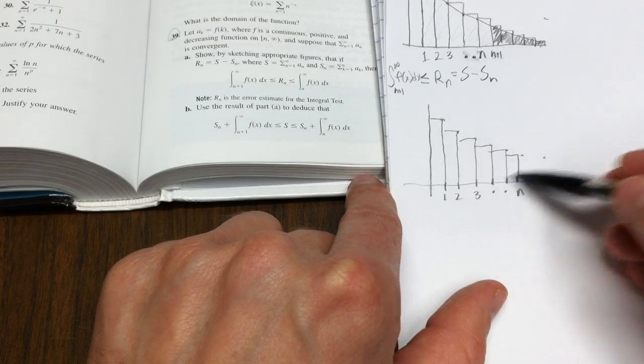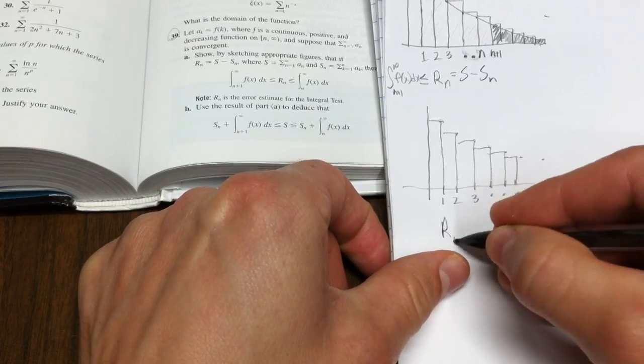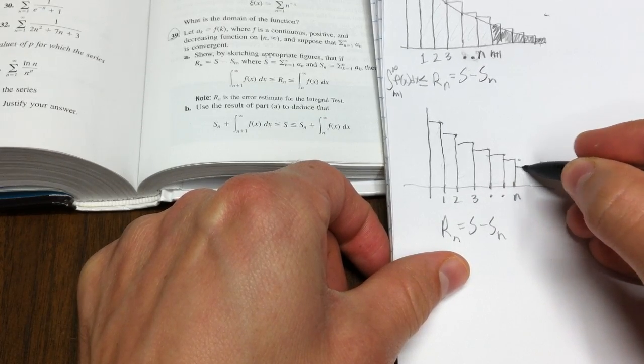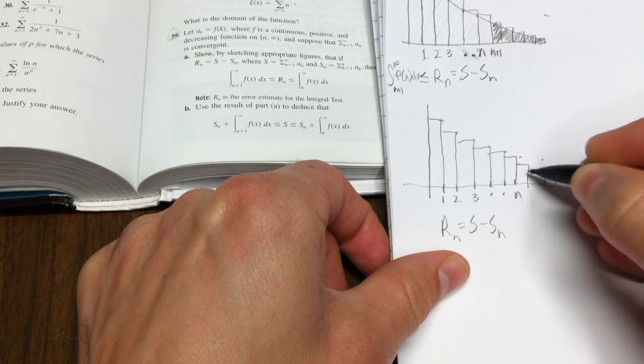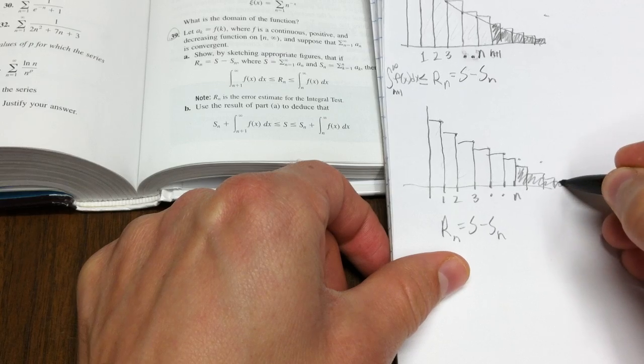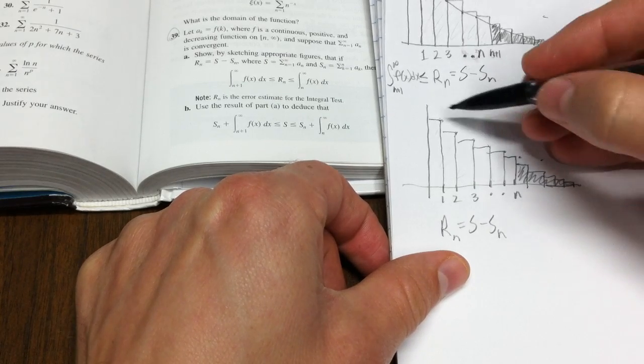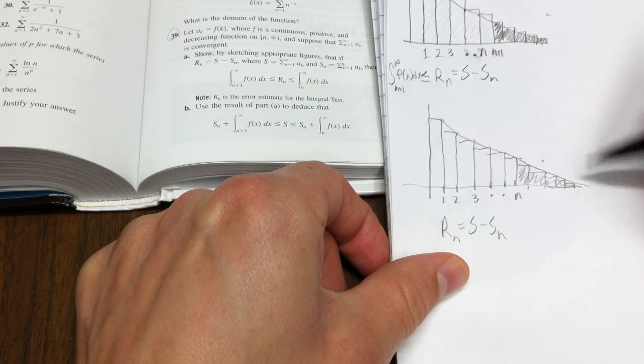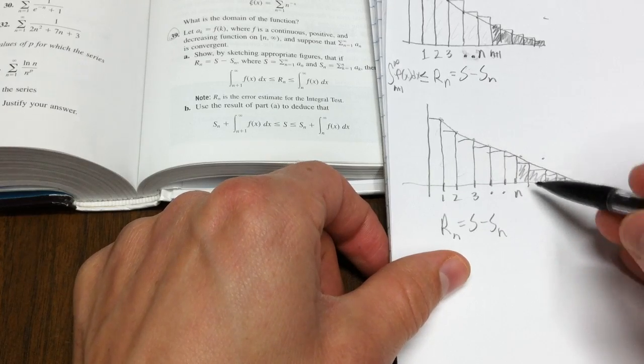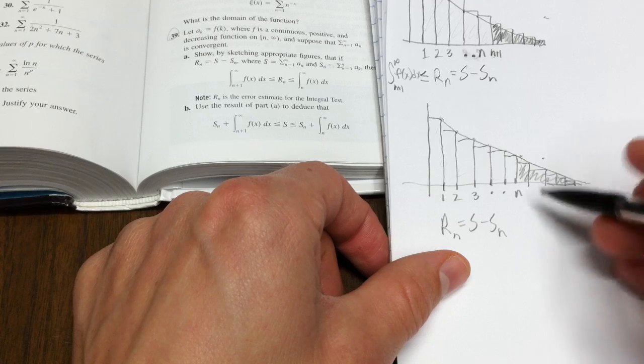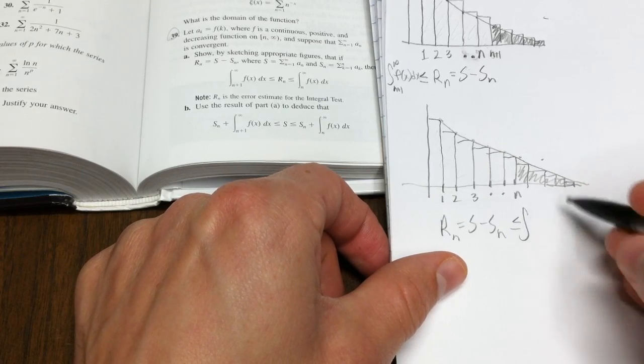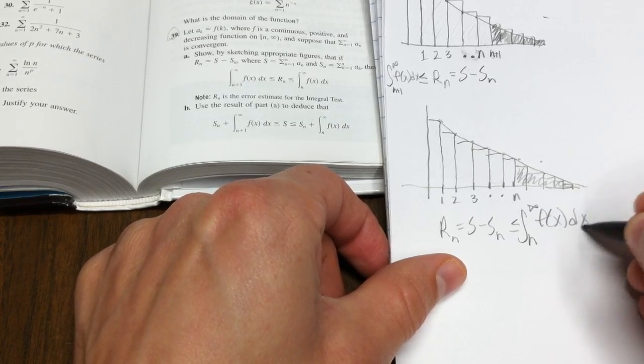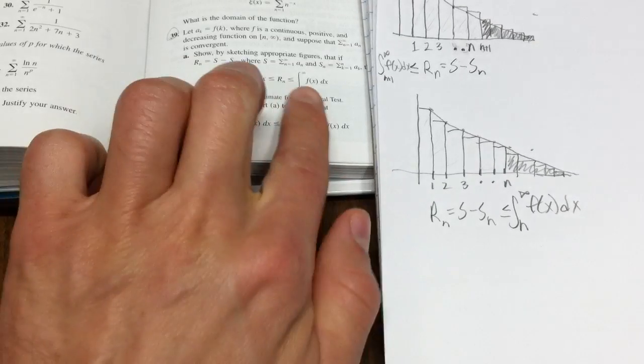So Sn is now that area. Rn equals S minus Sn. So Rn is this area out here, under these boxes. Now, what happened by moving it, now those are somehow left-hand sums, and you can see that if the integral is the area under that curve, this is clearly less than or equal to the integral from N to infinity of f of x dx. Sound good? So we have both halves of that.